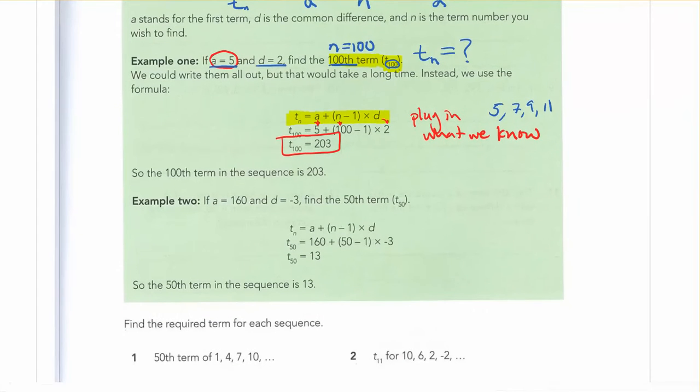So if we look at another example, here we've got a is equal to 160. So again, instead of writing a, they write 160. And then here we have d is equal to negative 3. So instead of writing d, they write down negative 3. And they want to find the 50th term in the sequence, that's n. We're going to write down 50 for n instead. And you plug it into your calculator. And in this case, you'll get 13.